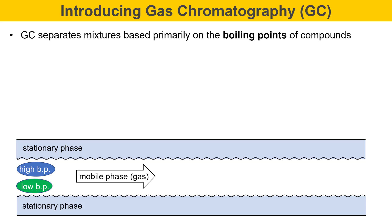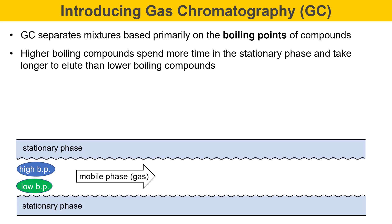GC separates mixtures based primarily on the boiling points of compounds. There are some exceptions, but boiling point is the key property in the columns that we're using. Higher boiling compounds tend to spend more time in the stationary phase, and they take longer to elute than lower boiling compounds. On the left, there are two molecules starting at the same place: a high boiling molecule represented in blue, and a low boiling molecule represented in green. As the mobile phase moves, it carries them along.